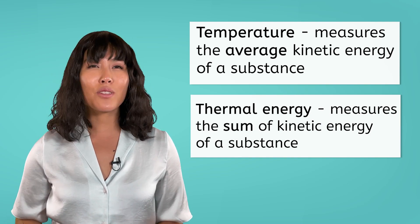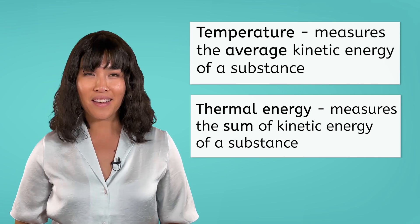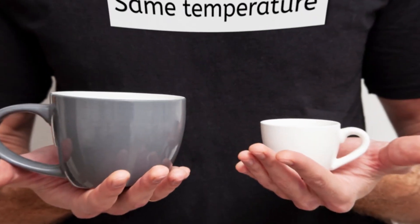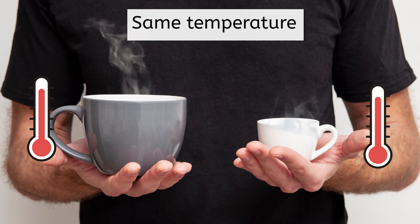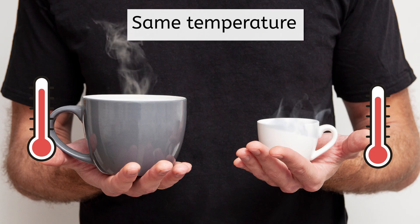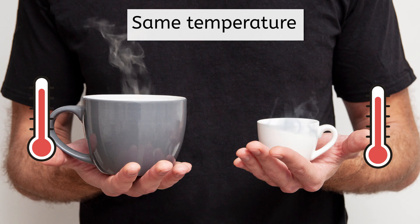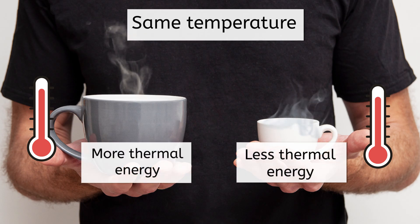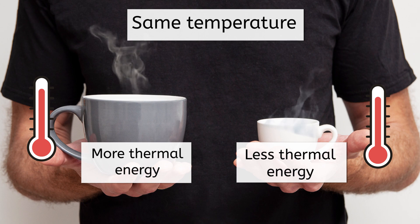To understand the difference, let's look at two cups of coffee. Both cups are at the same temperature and have identical coffee in them. Do they both have the same thermal energy? No, because the one on the left is bigger and therefore has more molecules. More molecules moving fast means more thermal energy.